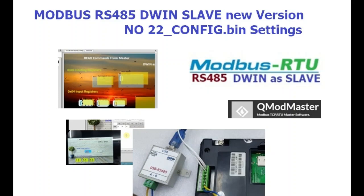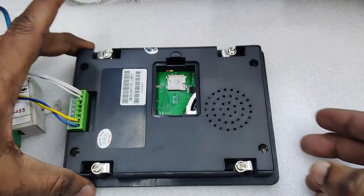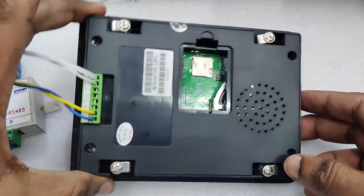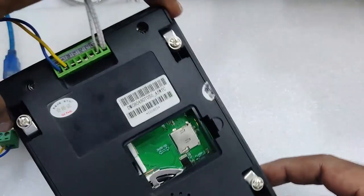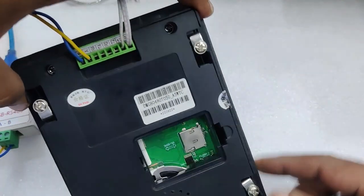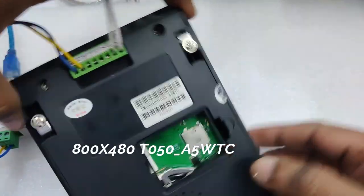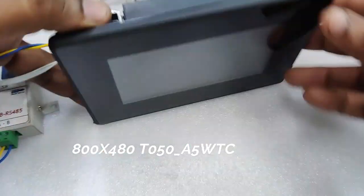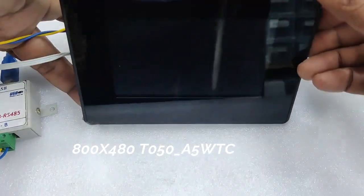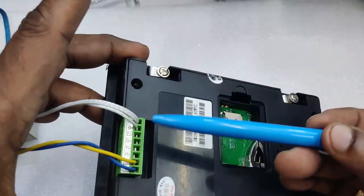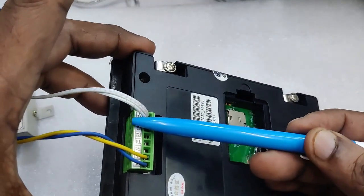Hello all, this video is on Modbus RS485 where DBin is used as slave. In this new version, no settings are required - only OS file download. Here we have an 800x480 5-inch industrial grid display with casing.